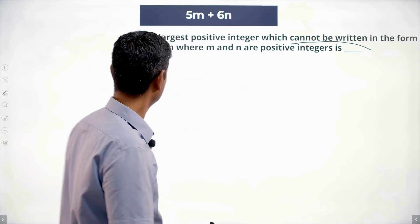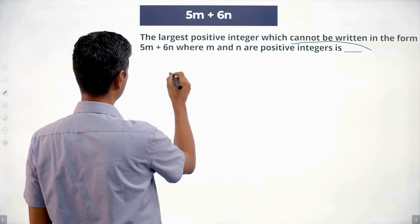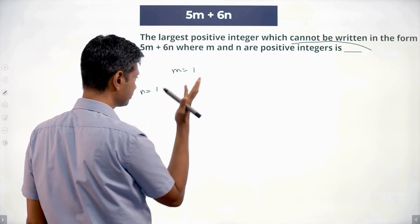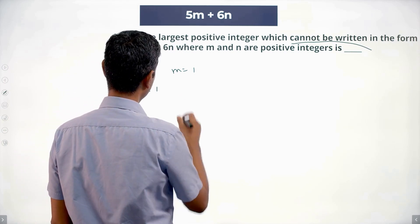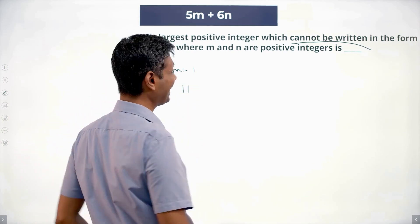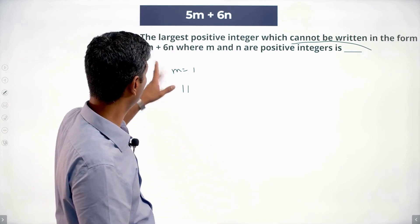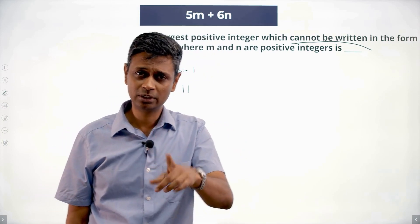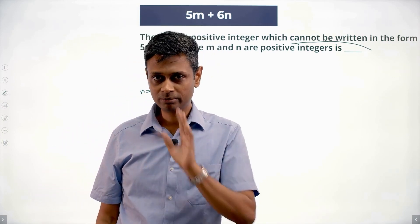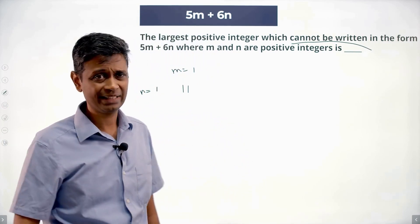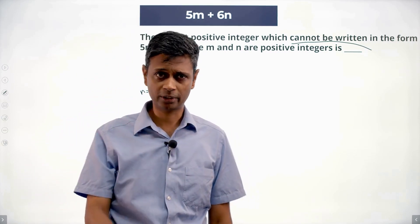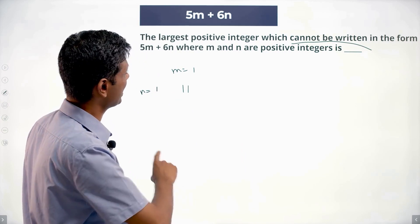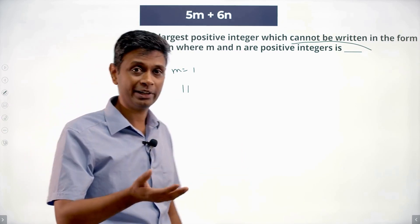m and n are positive integers, so I can put m equal to 1 and n equal to 1: 5 times 1 plus 6 times 1 is 11. So I can write 11 in the form 5m plus 6n. I cannot write 10 — the smallest values are m=1, n=1 giving 11, so 1 through 10 cannot be written.